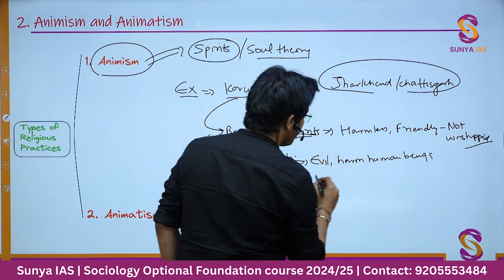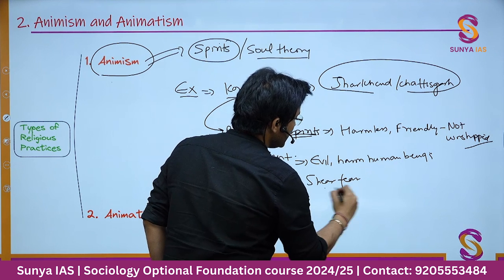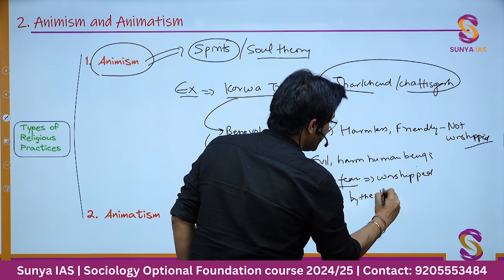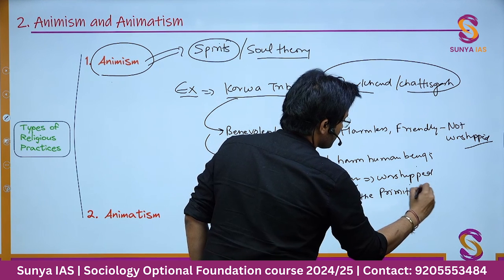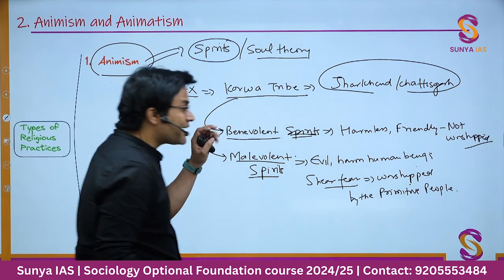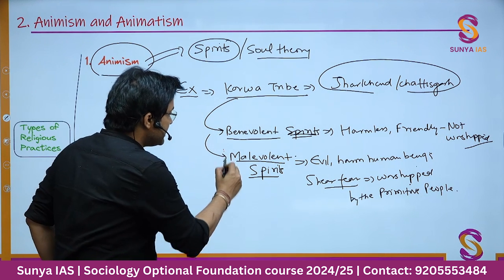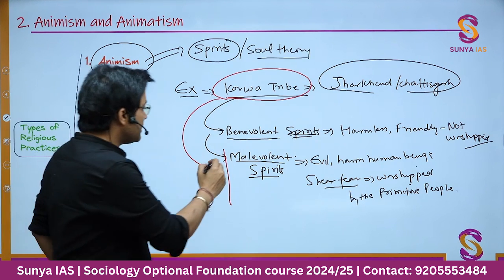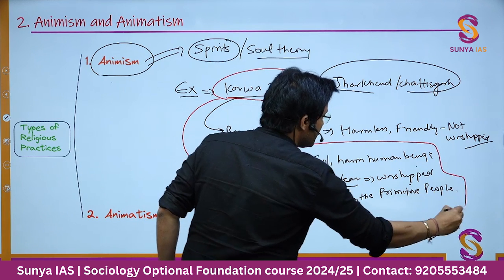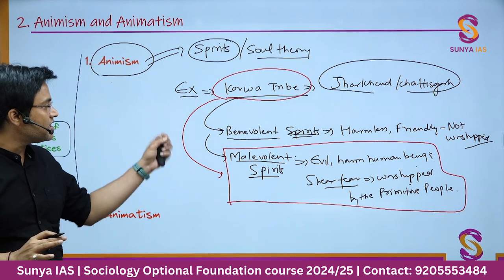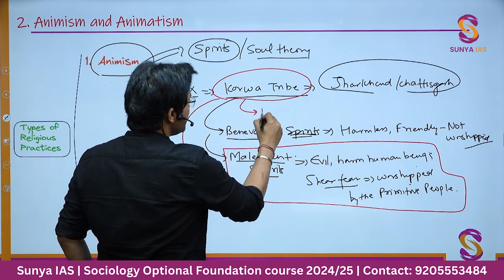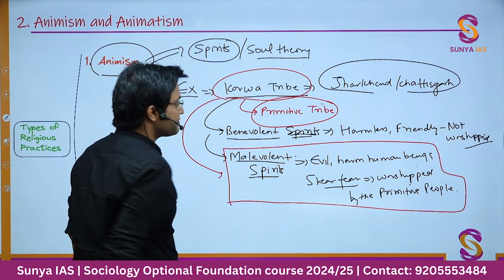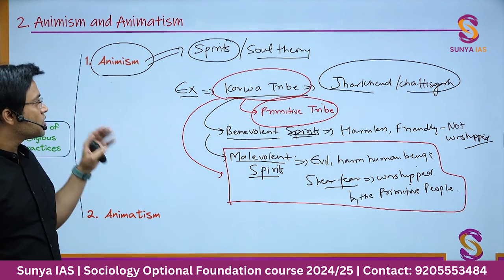Out of sheer fear, the malevolent spirits are worshipped by the primitive people. Even today this practice exists — the Korva tribe still practices animism because they believe in malevolent spirits. This shows that animism still exists in our society, as the Korva tribe represents a primitive or very simple society.